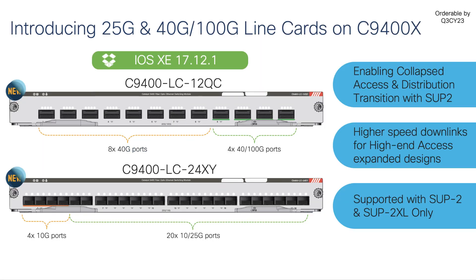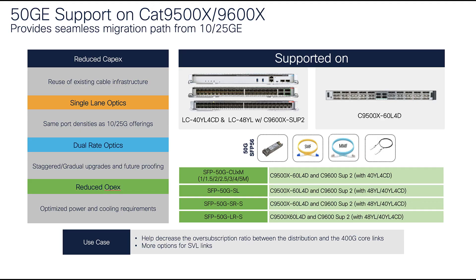Now let's take a look at the second line card. This is the C9400-LC-24XY. This line card comes with 24 SFP ports. The first 4 ports can support 10GB speed and the last 20 ports can support 10GB and 25GB speed. In addition to these two line cards, we are also now officially supporting 50GB optics on the 9500X and 9600 platforms.